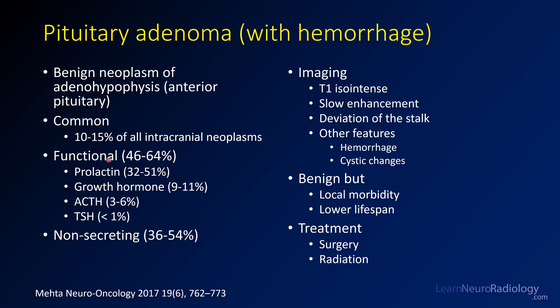About half or a little more than half of pituitary adenomas are functional. Of the functional ones, the most common hormone secreted is prolactin, followed by growth hormone. Many are non-secreting though — about half of them are non-secreting.